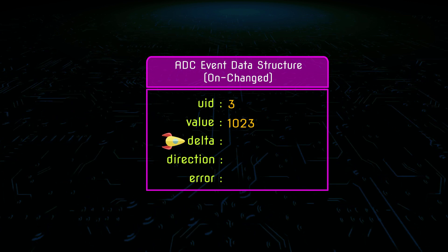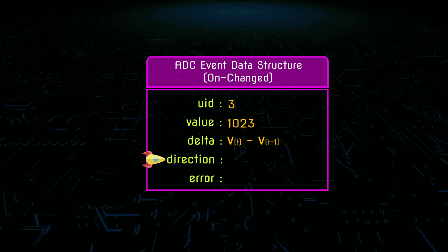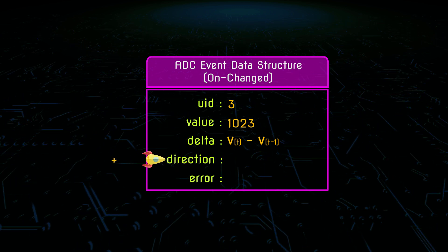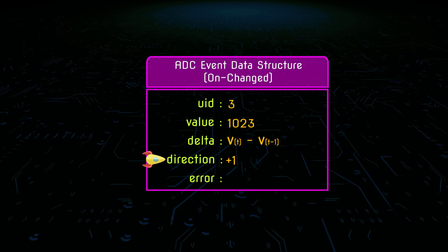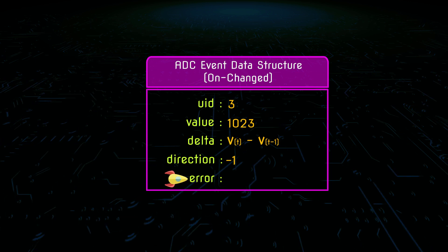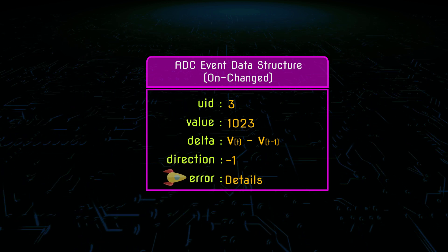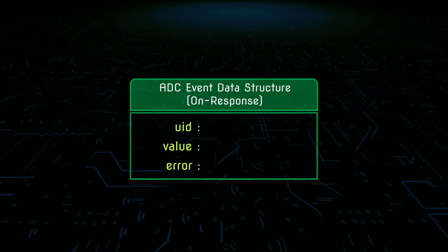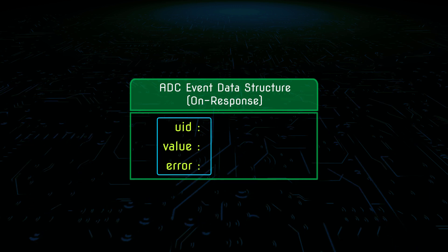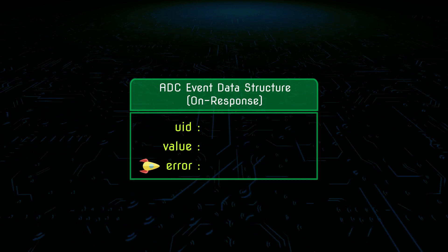The third key-value pair is the delta, which represents the difference in value between the current value and the previous value. The fourth one is the direction of change — if the value increases, the direction will be +1, meaning it goes up; if the value decreases, the direction will be -1, meaning it goes down. The last one is error information. If there are errors, this value will contain the details of that error. Now let's look at the onResponse event data structure, which contains only 3 key-value pairs: the UID, the value, and the error — representing the same things we discussed before.